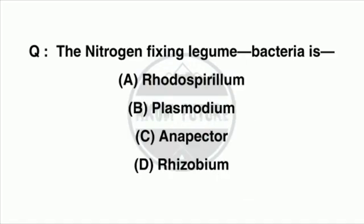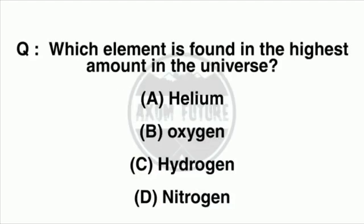Question 4: The nitrogen-fixing legume bacteria is the answer. Question 5: Which element is found in the highest amount in the universe? The answer is hydrogen.